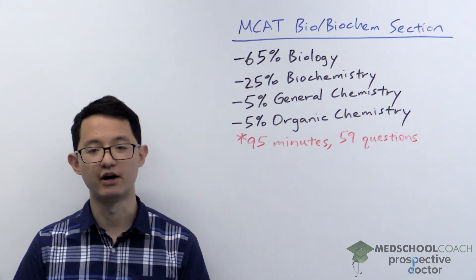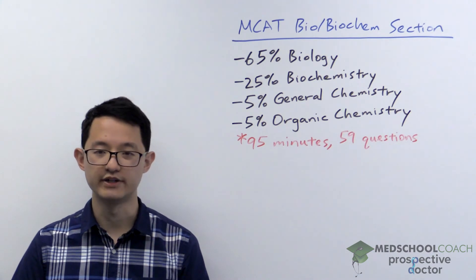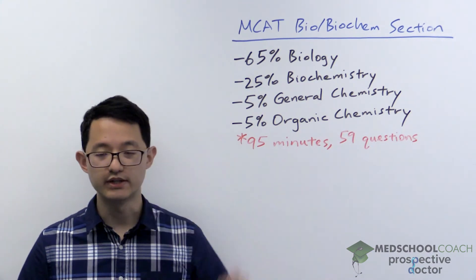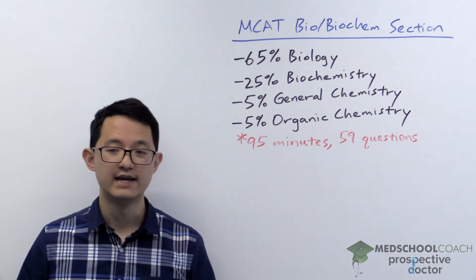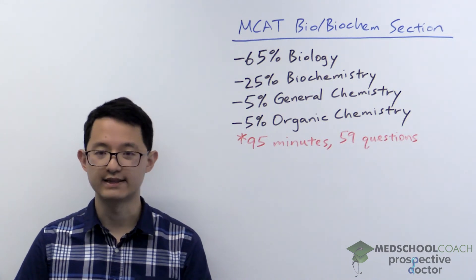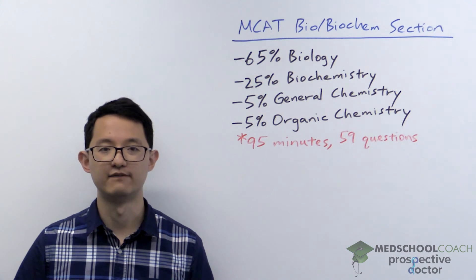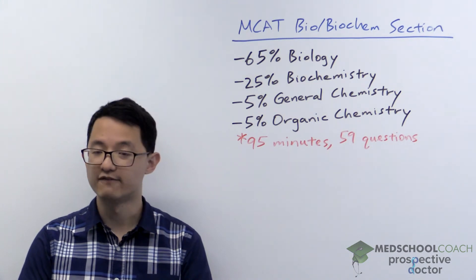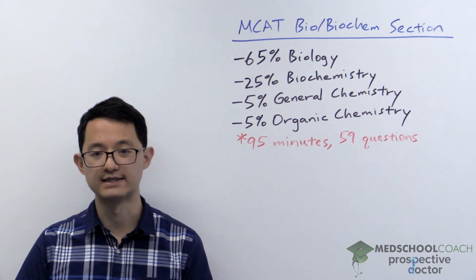Another reason why the bio biochem section is difficult is because there's quite a lot of content you need to have memorized here. For example, in biology you need to know all your hormones. There's quite a list of hormones and for each hormone you need to know what is the organ or gland that secretes it, what are the target organs that have the hormone, what are the effects of those hormones, and what causes those hormones to be released in the first place.